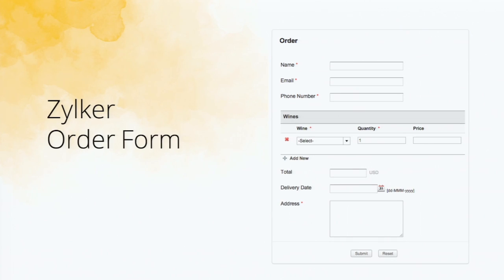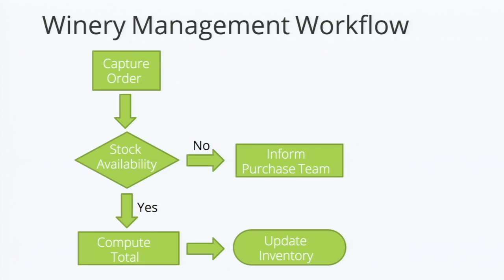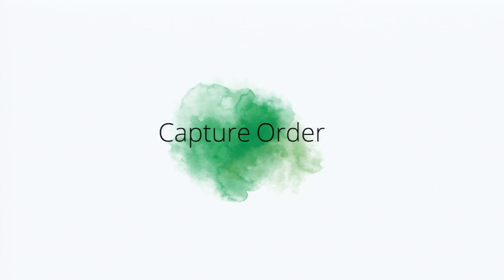This is the form we built to capture the order from the customers. And this is the inventory form we built to store our inventory details. So let's look at a simple workflow — this is the workflow of what we are going to build today. First, we are going to capture the order, check for stock availability. If it exists, we compute the total and update the inventory. Else, we'll inform the purchase team to make the purchase.